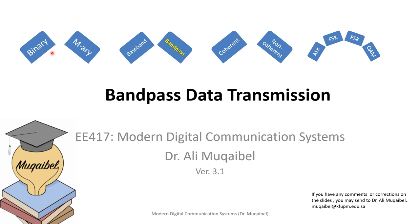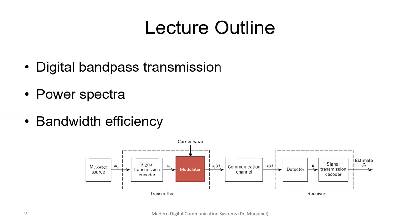We'll basically remind you of the difference between binary, M-ary, baseband, band pass, coherent, non-coherent, ASK, FSK, PSK, and QAM — these are different ways of classifying communication systems. Specifically, we'll look at the digital band transmission terminology, power spectra, and finally conclude with bandwidth efficiency.